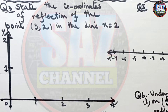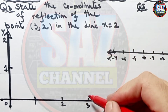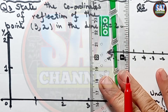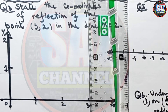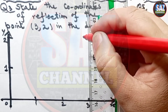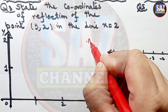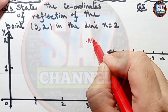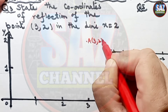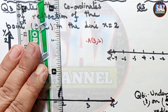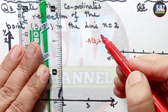In order to find the reflection of the point (3, 2), I have to mark the object at x equals 3 and y equals 2. This is the object. I mark the point and write the coordinates A(3, 2), and then I draw the mirror line x equals 2.